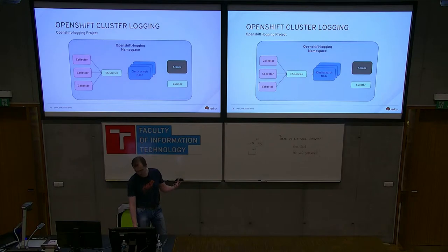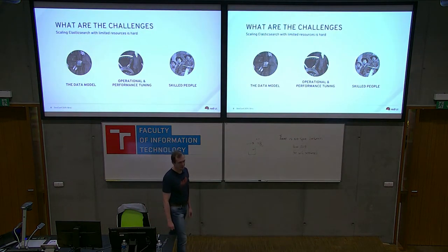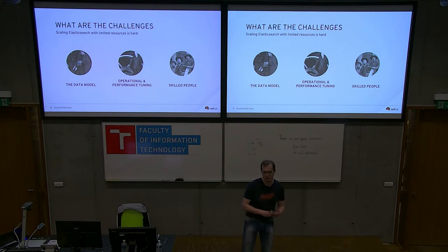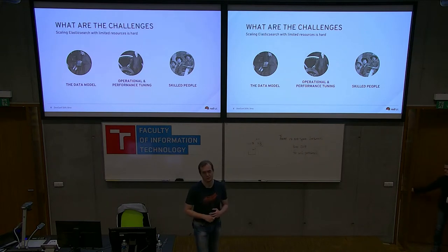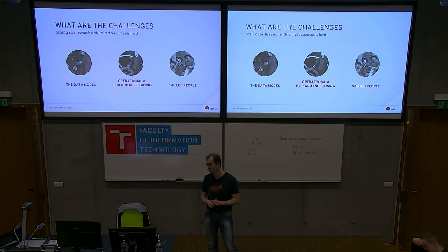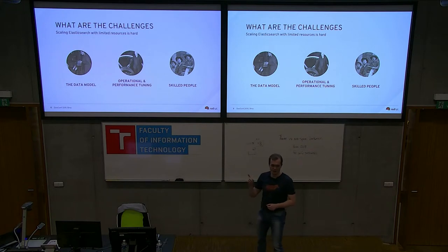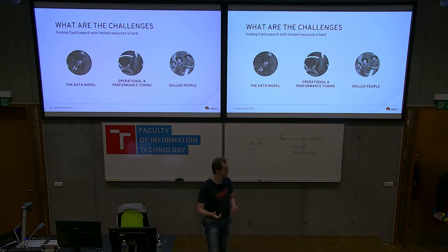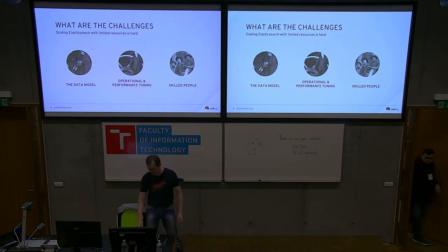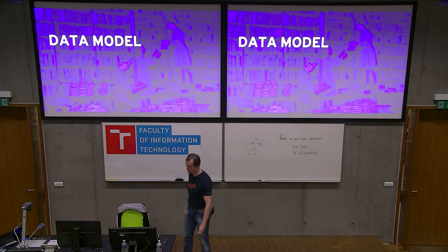So what does it take to run an Elasticsearch cluster inside OpenShift? Every challenge or problem can fall into one of three categories. First is the data model — the model of your log data, which can be a scalability challenge for Elasticsearch. Second is the environment — the physical hardware and topology of your cluster. Third, and last but not least, is the people — they are very important.